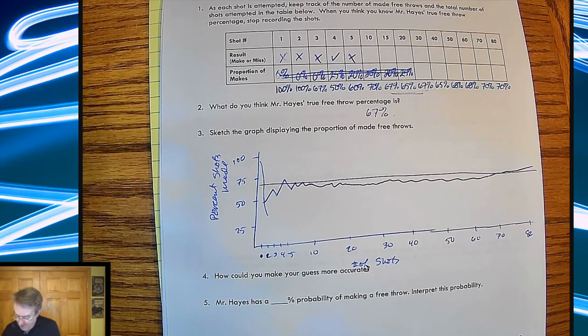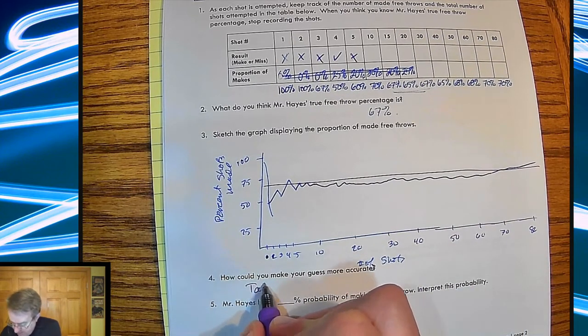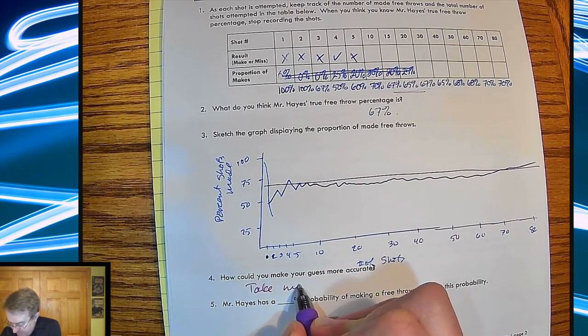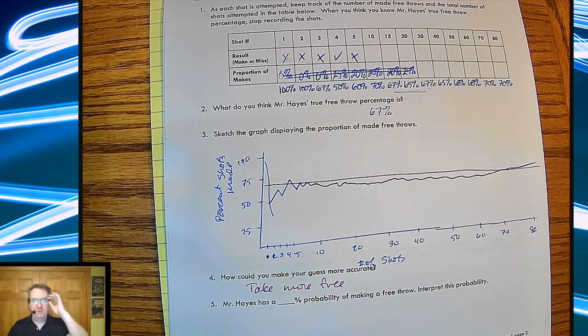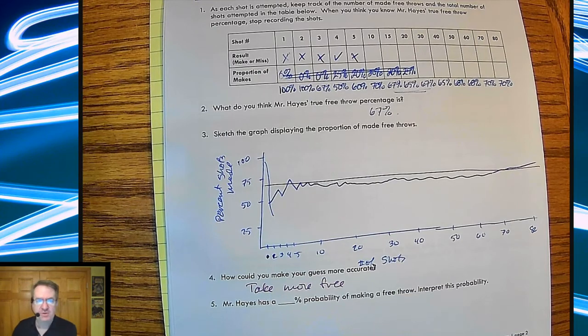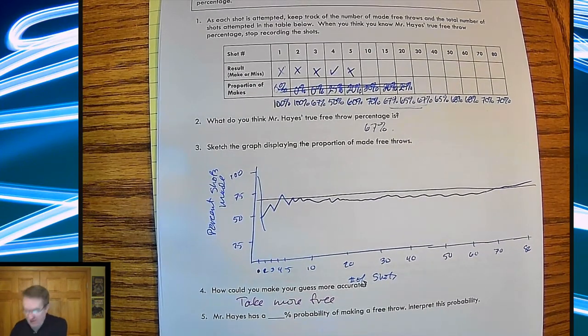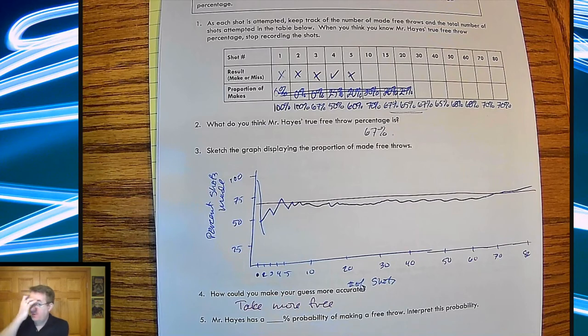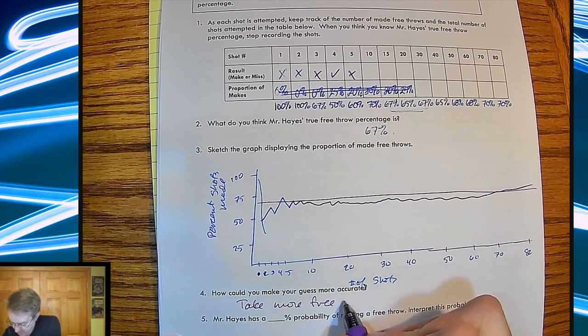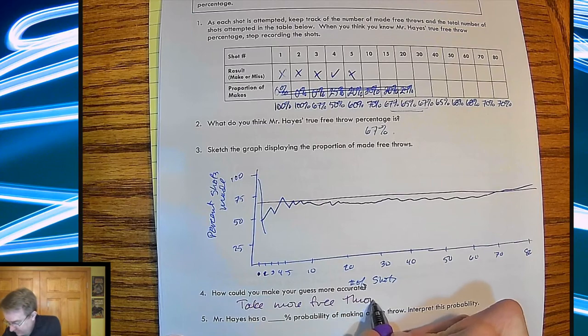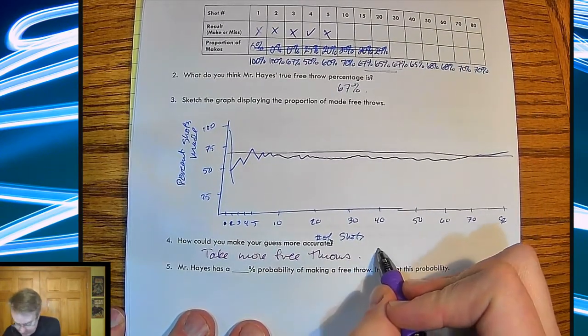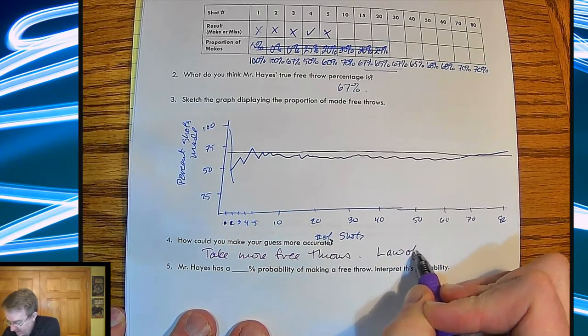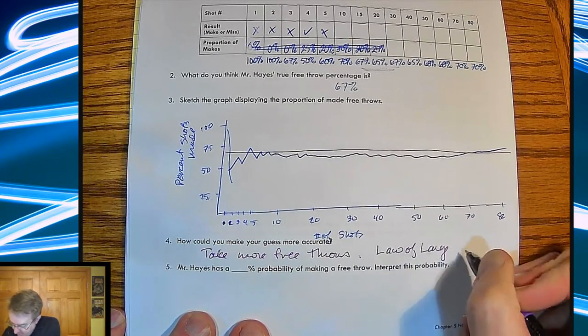Okay. Best way to make your guess more accurate is take more free throws. You see this a lot very early on in sports seasons. There's always the baseball player who hits like three home runs on opening day and everybody's going to be like, he's on pace to hit 500 home runs a season. Do you really think that's going to happen? No. Why? Because he's got more at-bats to take. So take more free throws. This is called the law of large numbers.